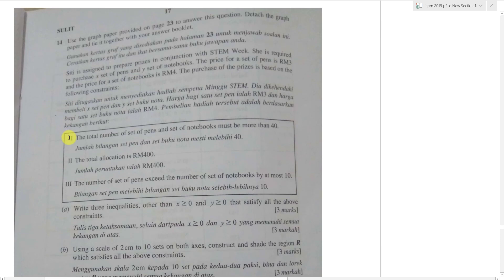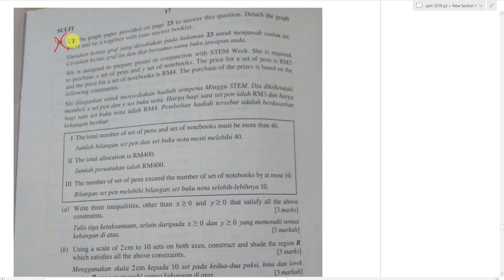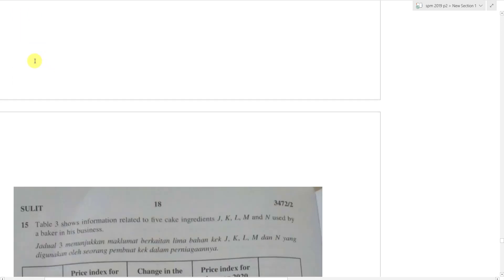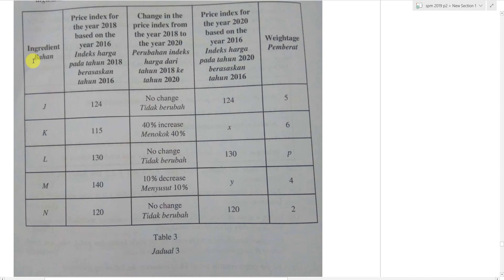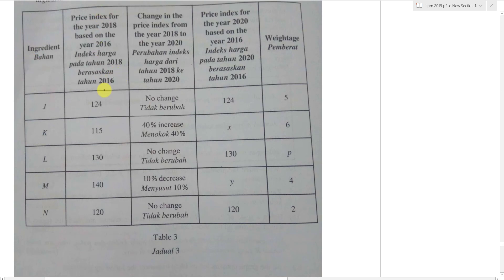I will skip the linear programming question. If you really want that explained, let me know and I can make a separate video. Moving on to the last question of this paper — index numbers. We have index numbers: one for 2018 based on 2016, and one for 2020 based on 2018. The index number for 2020 based on 2016 = (I₂₀₁₈/₂₀₁₆ × I₂₀/₁₈) / 100.